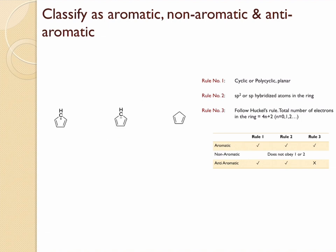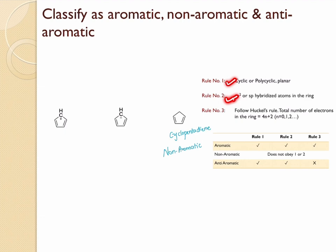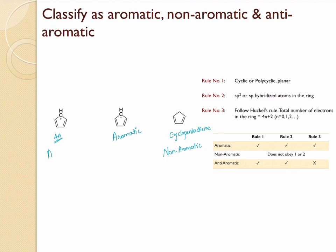Cyclopentadiene has a cyclic structure, but one carbon is sp3 hybridized, so it is non-aromatic. In the anion, that lone pair can be donated into the ring, making all atoms sp2 hybridized. Rule one and two are obeyed, and there are three electron pairs total, obeying rule three — so the cyclopentadienyl anion is aromatic. For the cation, the structure is cyclic and all atoms are sp2 hybridized, but rule three is disobeyed because it has only two electron pairs — a 4n system — so the cyclopentadienyl cation is anti-aromatic.